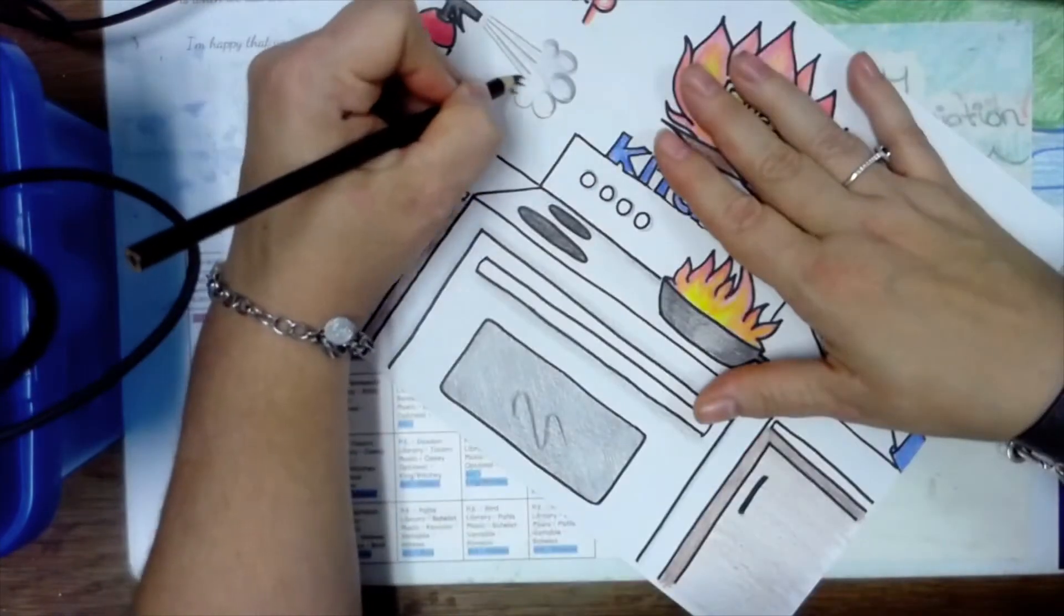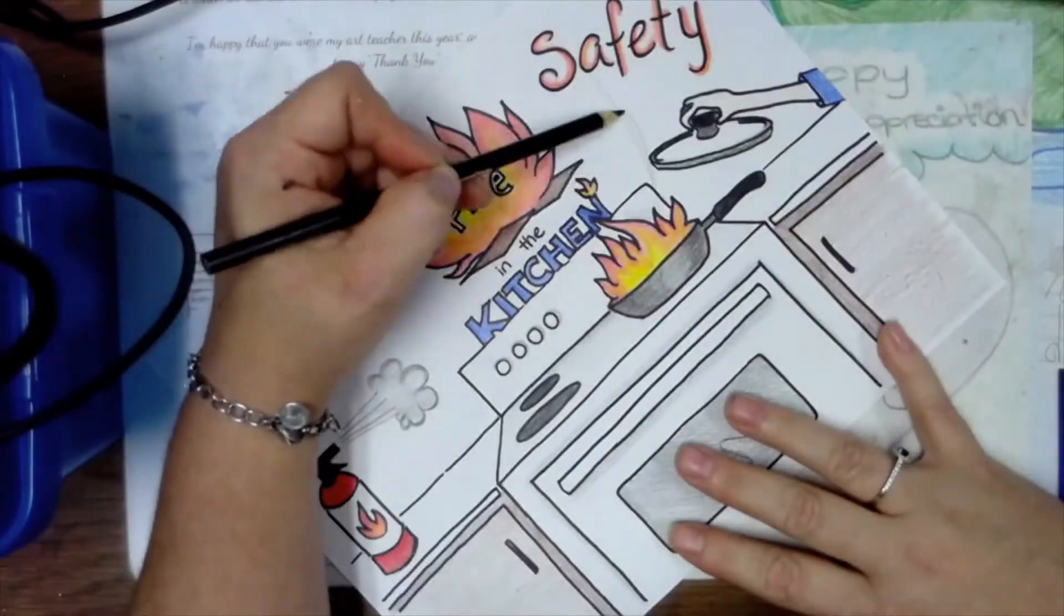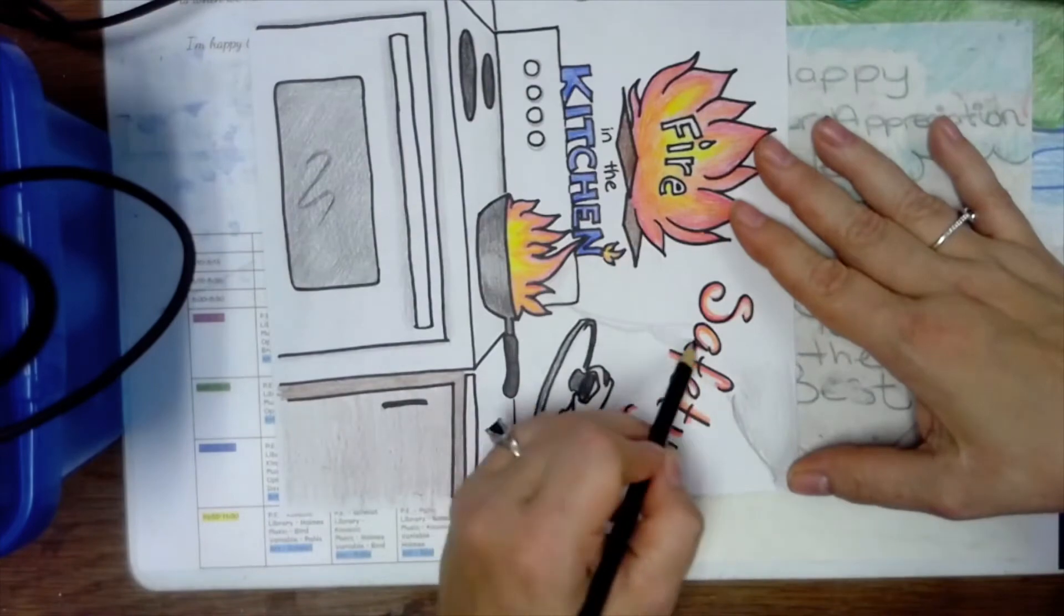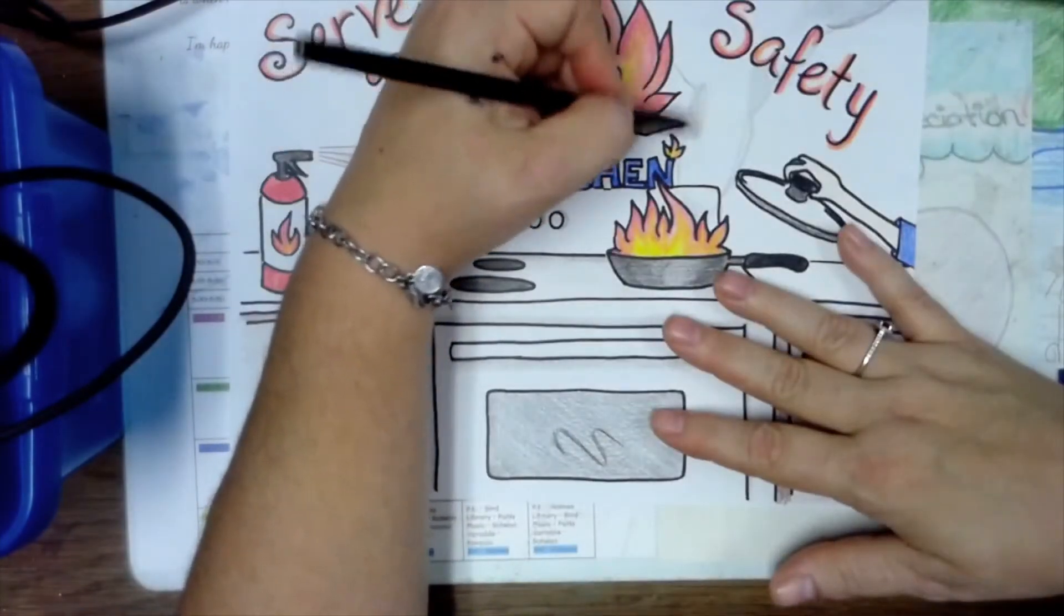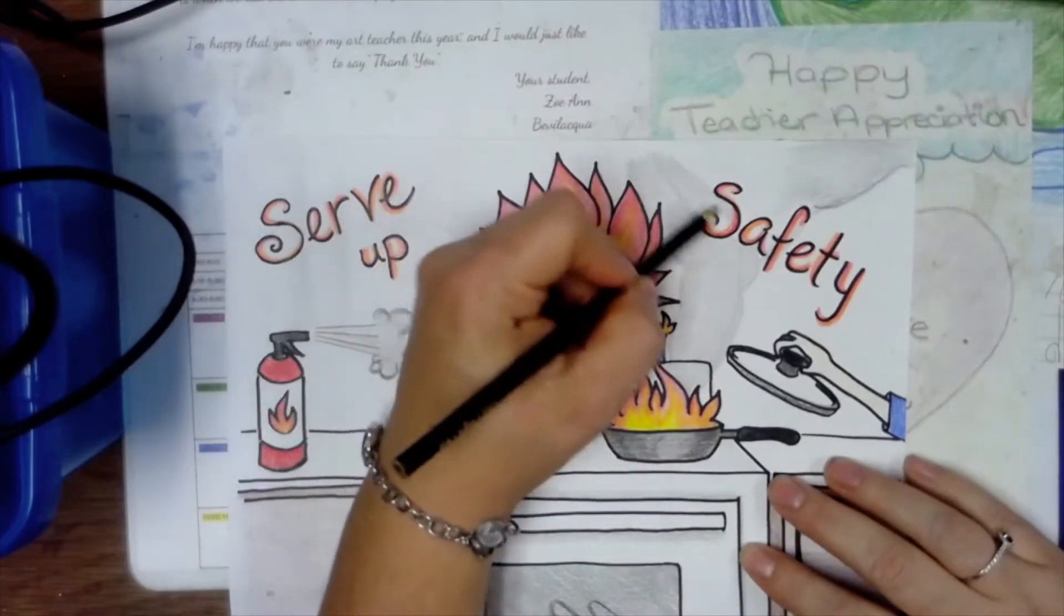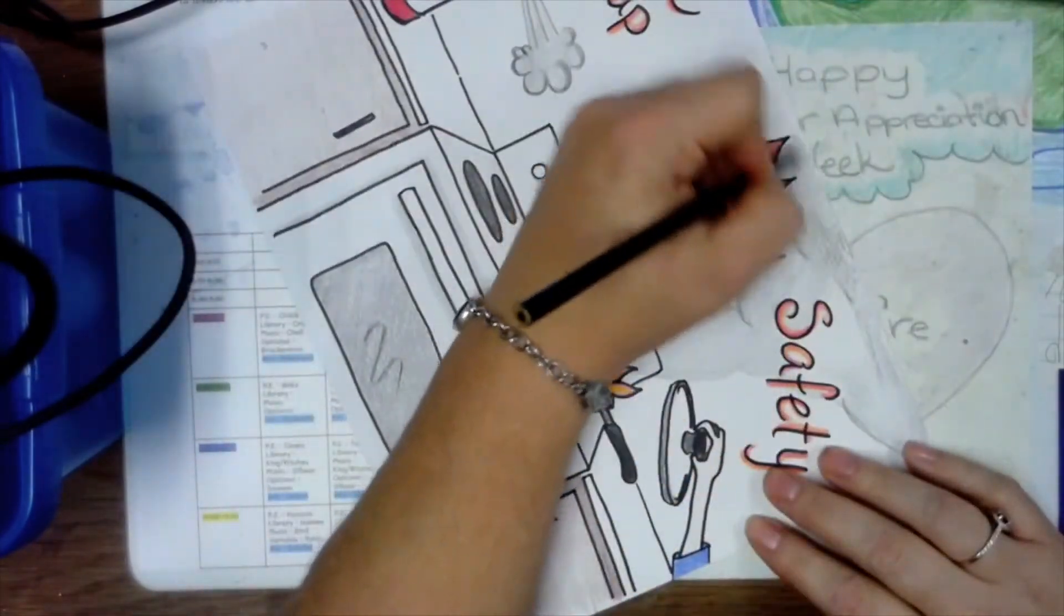I'm also going to add the foam that comes out of the fire extinguisher. And over here I'm going to add some smoke from the fire. We all know that smoke rises, so you want to make that coming up towards the ceiling, and it's going to kind of look like a puffy cloud.